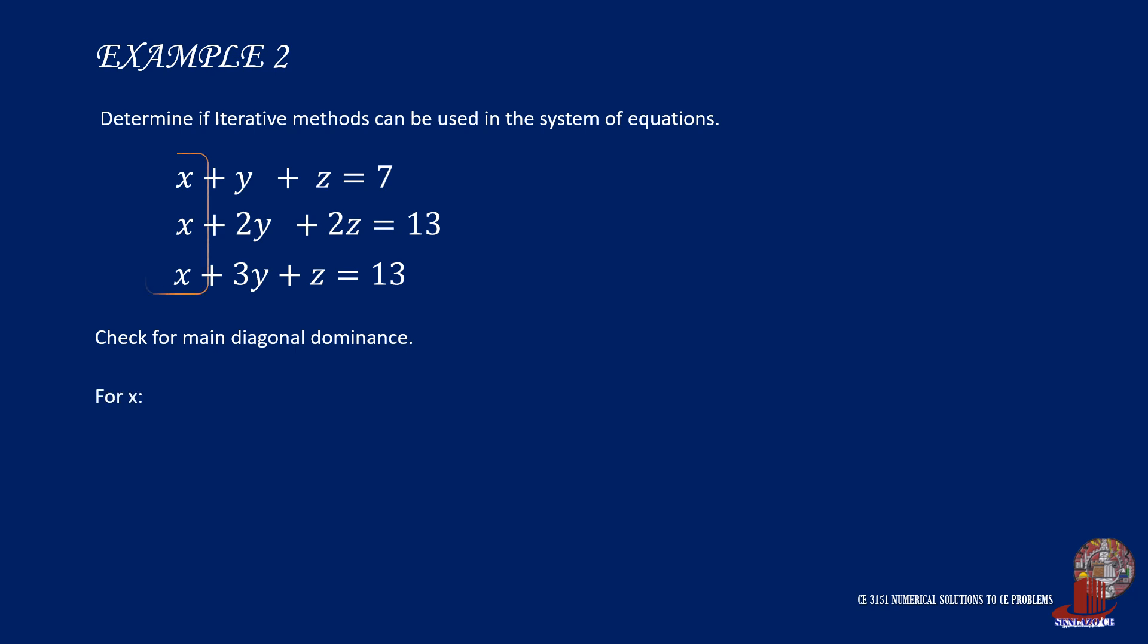So focus on the x variables where we have all 1 as their coefficients. So at this point, we can't conclude any arrangements yet. Move to the y variable, and here we can see that 3y is dominant, so its equation will be for y.